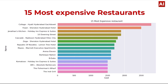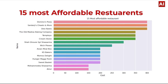This slide shows the 15 most expensive restaurants, where the x-axis represents cost of dishes and the y-axis denotes the name of the restaurant. The most expensive restaurant has a cost of around 3,000, while the last on the list — Indy Grill — costs around 1,500.